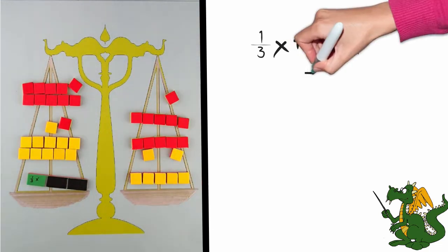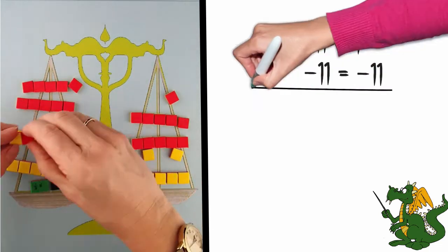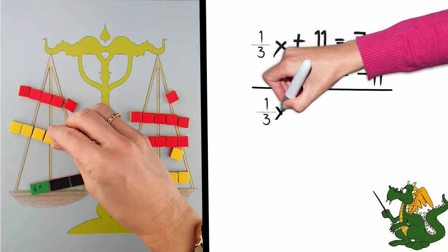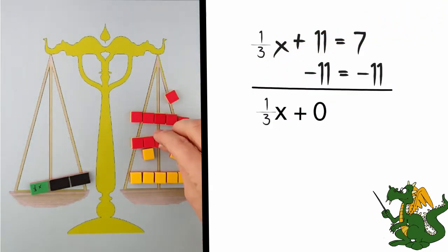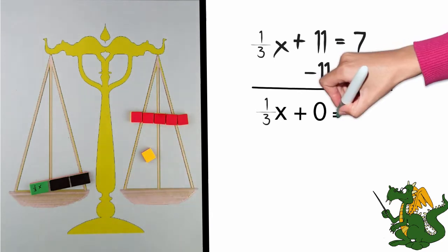or on paper I will need to add negative 11 to both sides of the equation. 11 plus negative 11 equals 0, and 7 plus negative 11 is negative 4.